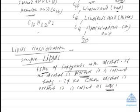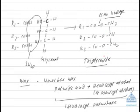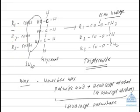A triglyceride is a fat consisting of a molecule of glycerol esterified with three fatty acids. R1, R2, and R3 represent the hydrocarbon chains linked with carboxylic acid groups. Glycerol is a trihydric alcohol, meaning it has three hydroxyl groups, so it can be esterified with three fatty acids to form a triglyceride.